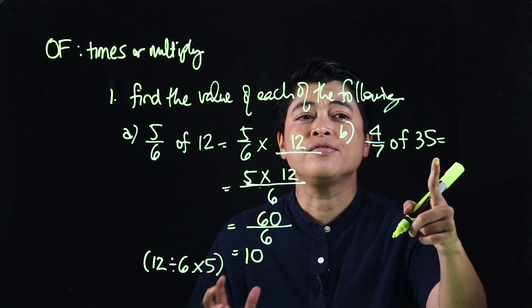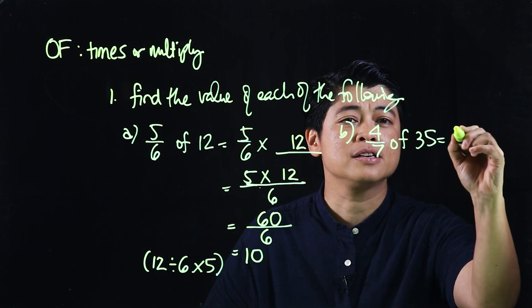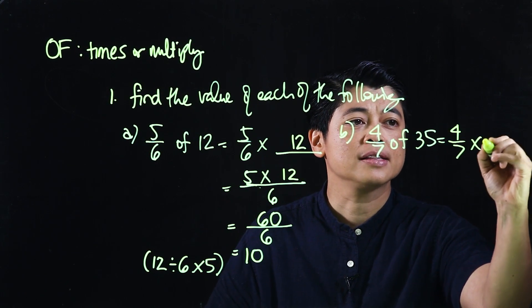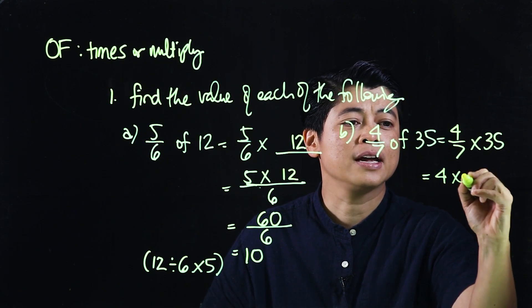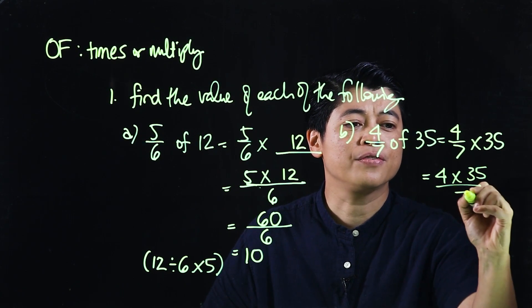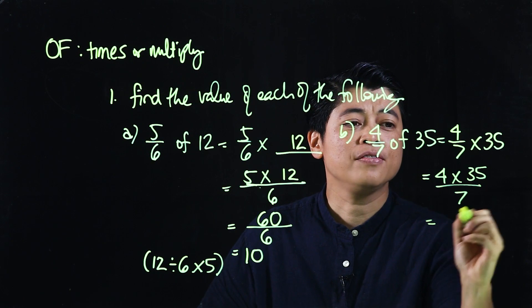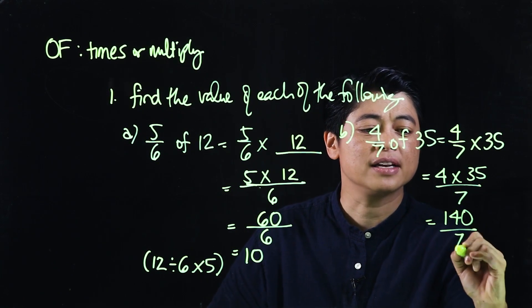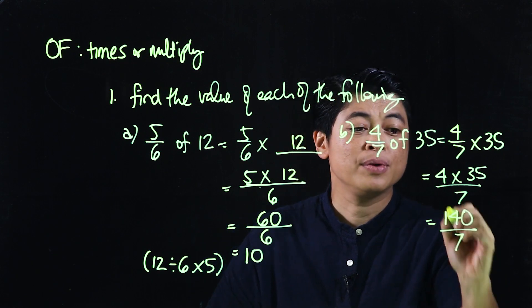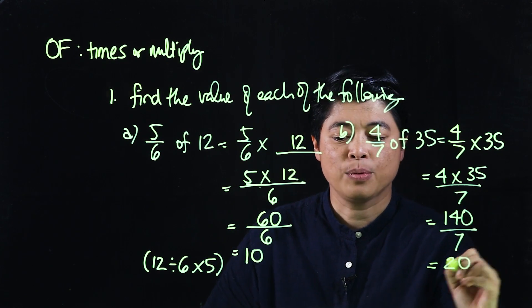Another example is four-sevenths of 35. If we follow their method, this will be 4/7 times 35, and then this will be 4 times 35 over 7. If we multiply that, that will be 140 divided by 7, and when we divide that will be 20.